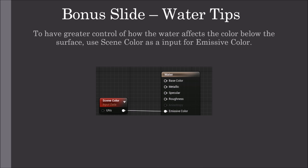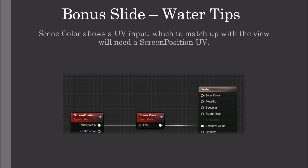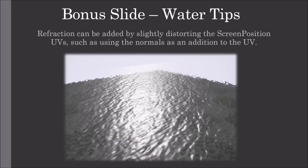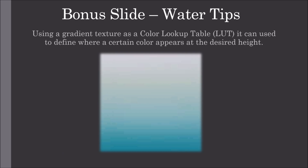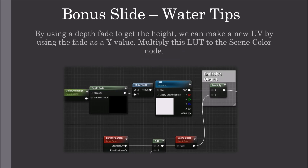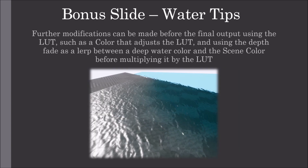To have greater control of how the water affects the colour below the surface, use scene colour as an input for the emissive colour. Scene colour allows a UV input which, to match up with the view, will need a screen position UV node. Refraction can be added by slightly distorting the screen position UVs, such as using the normals as an addition to the UV. Using a gradient texture as a colour lookup table can define where a certain colour appears at the desired height — set the X and Y axis tiling methods to clamped and filter as nearest on the texture. By using a depth fade to get the height, we can make a new UV using the fade as a Y value, then multiply this lookup table to the scene colour node.